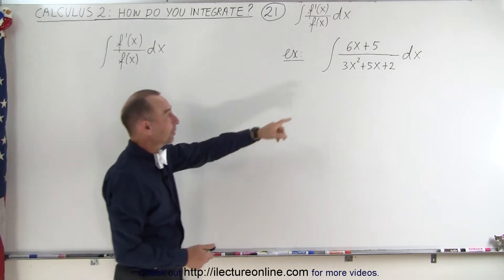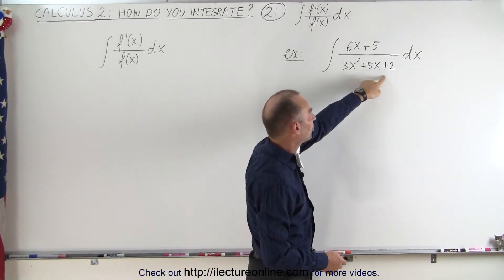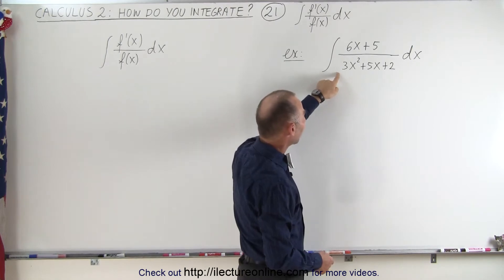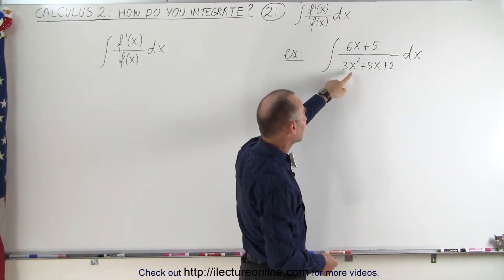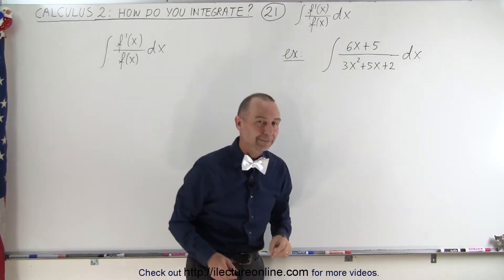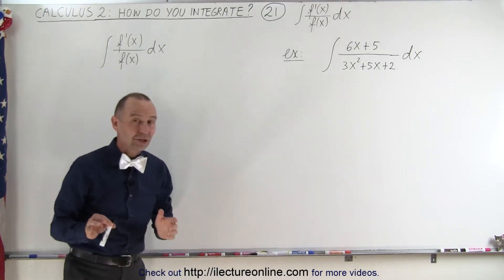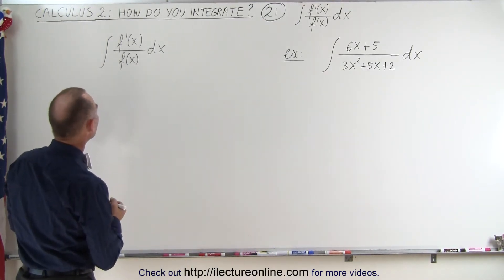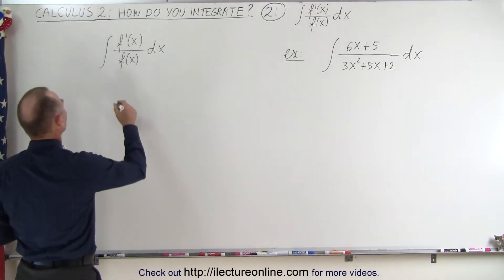For example, here in the denominator we have 3x squared plus 5x plus 2, and if you take a look at it you can see that the numerator happens to be the derivative of the denominator. In that case it's actually quite an easy integral to execute. What we can do here is the following.